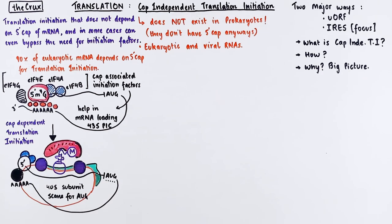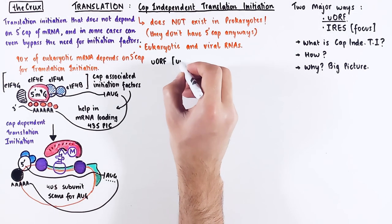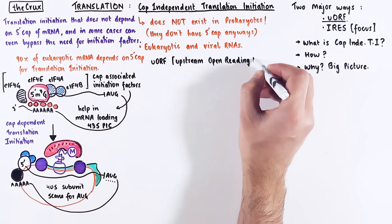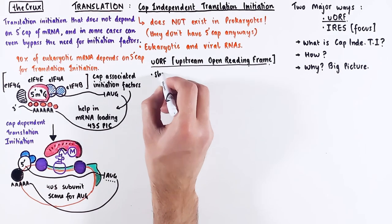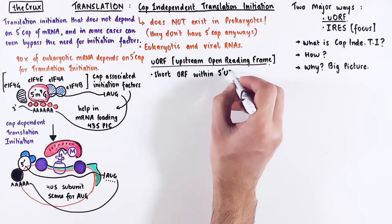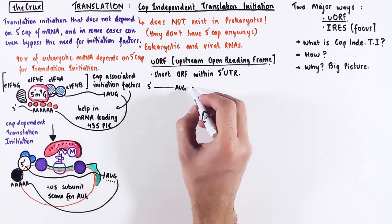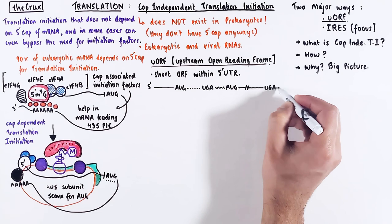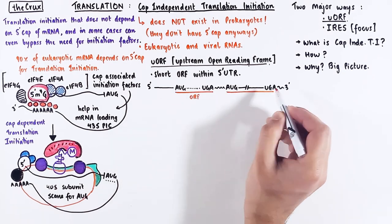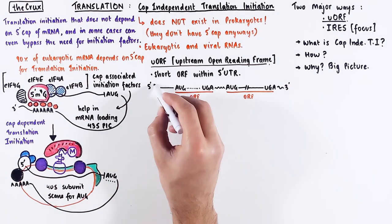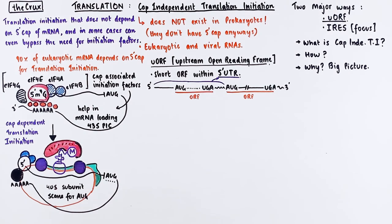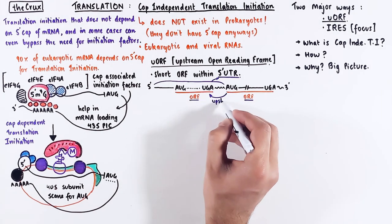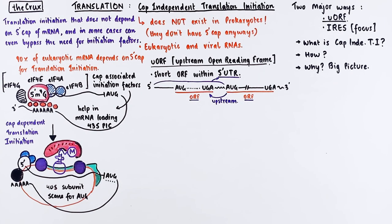Now let's talk about CAP-independent translation initiation, and we'll start by discussing the upstream open reading frame. An upstream open reading frame is a short open reading frame within the 5' untranslated region. For example, in this mRNA, you have two open reading frames from AUG to UGA. The one which is contained in the 5' UTR is called the upstream open reading frame, simply because it is present upstream of the coding region.